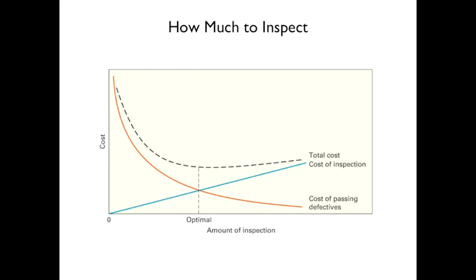How much to inspect? The red line represents the cost of passing defects, and the blue line represents the cost of inspection. Adding those two lines together gives a dashed curve, and the optimal amount of testing is at the lowest point of that curve.